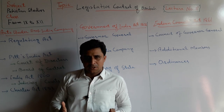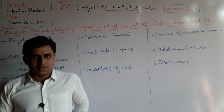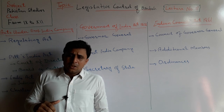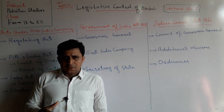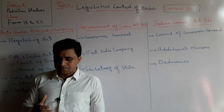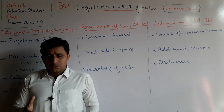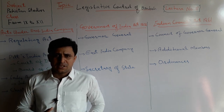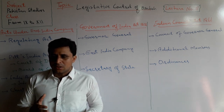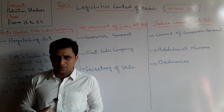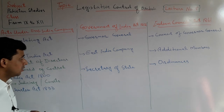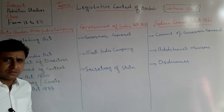We also studied how the British came to India and why they came to India. At first they came to India for trade and commerce, but slowly and gradually they occupied the territories and regions of the subcontinent. They started ruling over India. The Mughal Empire fell and the last Mughal Emperor was Bahadur Shah Zafar, who was sent into exile in Rangoon.